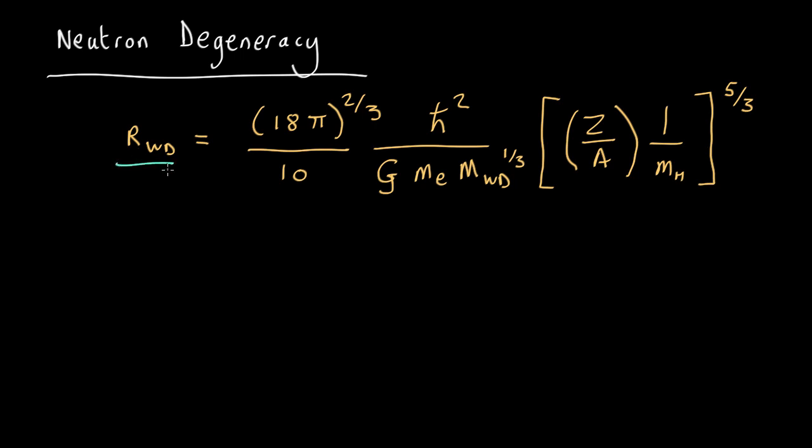Well, here is the equation for the radius of a white dwarf, which we worked out by balancing the quantum mechanical pressure against gravity. And the same calculation should apply to something supported by neutrons. But what's going to change? Well, that's all a constant, that term, and this is a constant, and that's a constant, so those are not going to change.